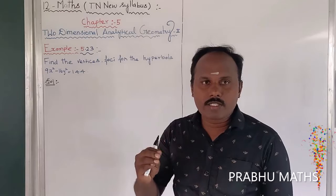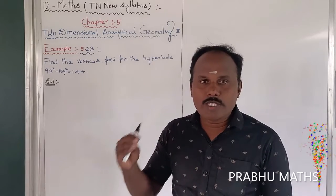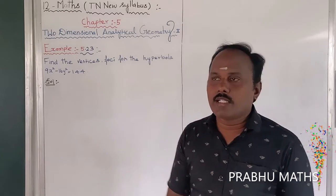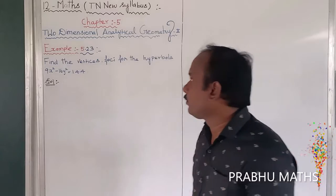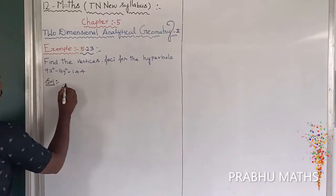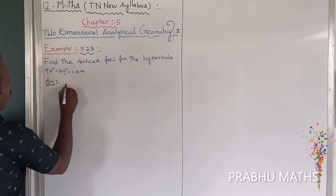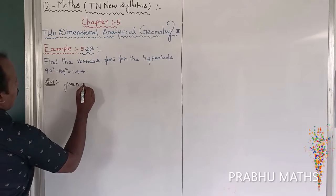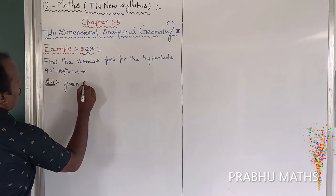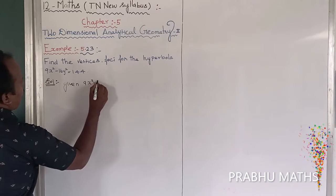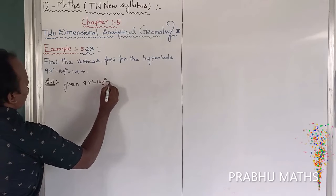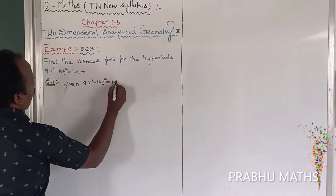The general form is x squared over a squared minus y squared over b squared equals 1. So the given equation is 9x squared minus 16y squared equals 144.